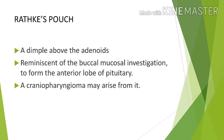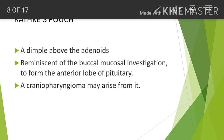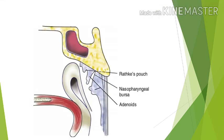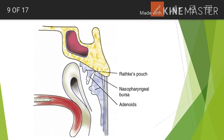Rathke's pouch is a dimple above the adenoids — a small depression representing a remnant of the buccal mucosal invagination that forms the anterior lobe of the pituitary. An important point to remember: a craniopharyngioma can arise from this pouch. A diagram demonstrates the adenoids, the nasopharyngeal bursa as an epithelial-lined median recess, and Rathke's pouch just above the adenoids.